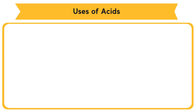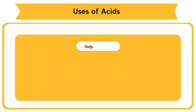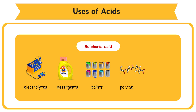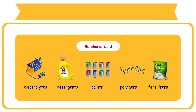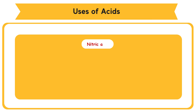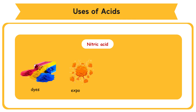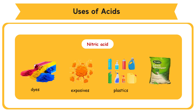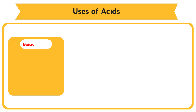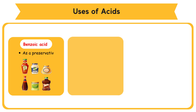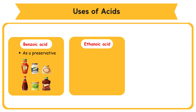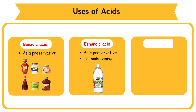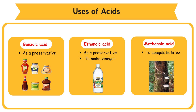Uses of acids: sulfuric acid is used to make electrolytes, detergents, paints, polymers, and fertilizers. Nitric acid is used to make dyes, explosives, plastics, and fertilizers. Benzoic acid is used as a preservative. Methanoic acid is used as a preservative, to make vinegar, and to coagulate latex.